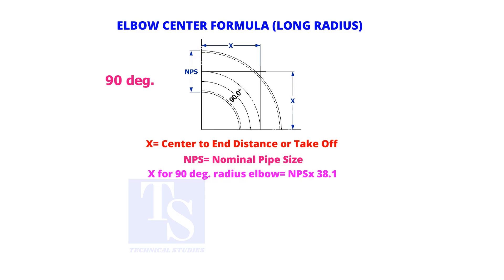Assume that the nominal pipe size is 8 inches. The center to end dimension, x, is 8 multiplied by 38.1, which equals 304.8 millimeters.